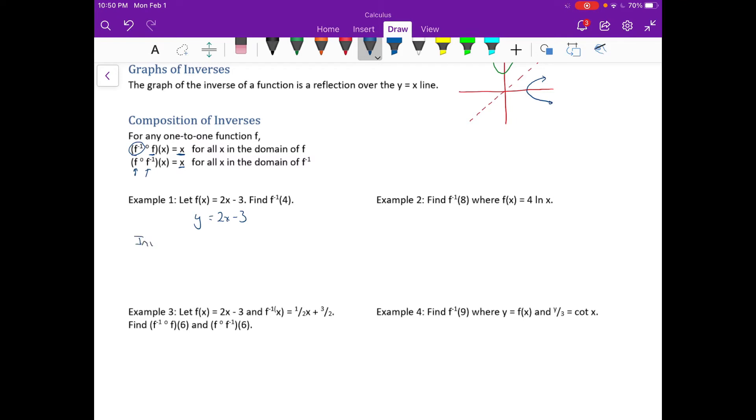So we can find the inverse. So we'll write this as y equals 2x minus 3. The inverse, what we need to do is interchange the x and the y. And solve for y so we can add 3 to both sides and divide by 2.